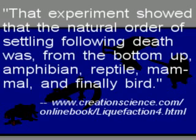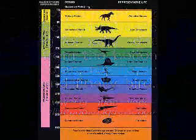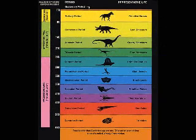But even if it did, the conclusion derived from the experiment makes no sense. That experiment showed that the natural order of settling following death was, from the bottom up, amphibian, reptile, mammal and finally bird. So what? That's not the order in which we find these animals in the sedimentary layers. We find plenty of birds in sedimentary layers underneath amphibians, and we find plenty of reptiles above mammals.